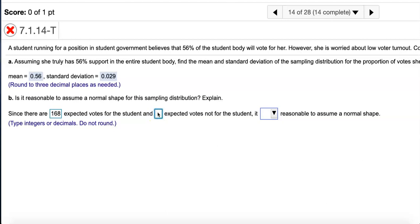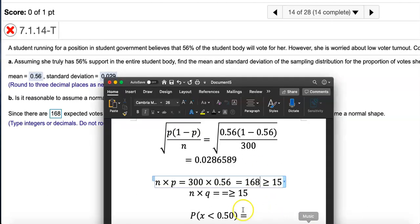Think about this: if you're expecting out of 300 that 168 of them are going to vote for her, how many will not vote for her? This one you will simply do 300 minus 168, and 300 minus 168 is 132.